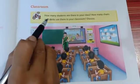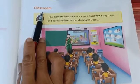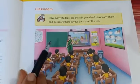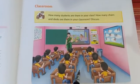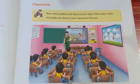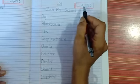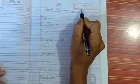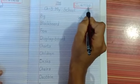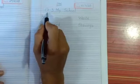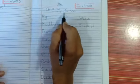But kids, before starting this topic, we will write some new words in our SS notebook. So open your notebook. Write today's date: 6, 7, 20. Chapter 3 — My School.